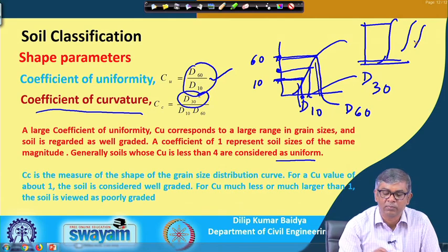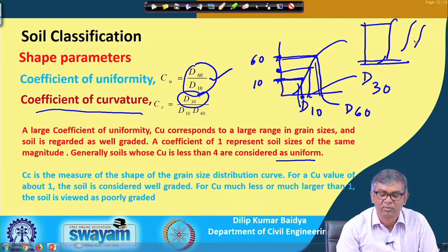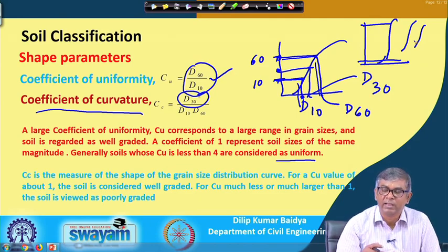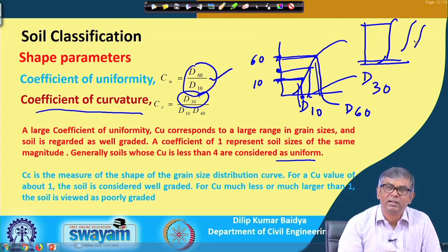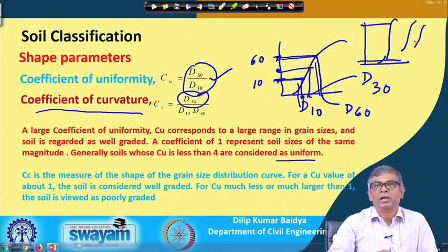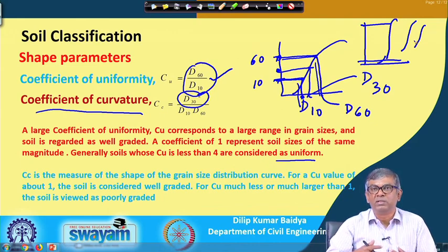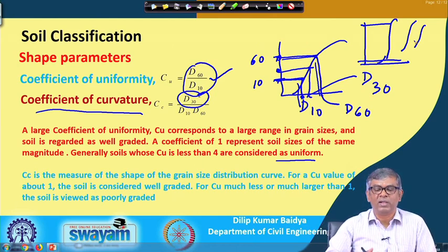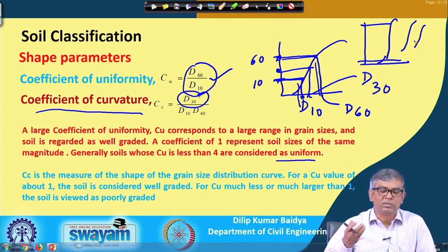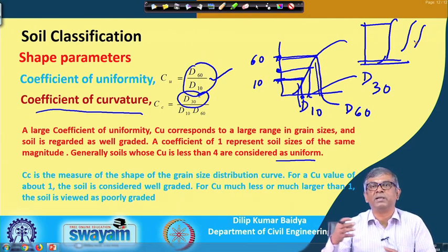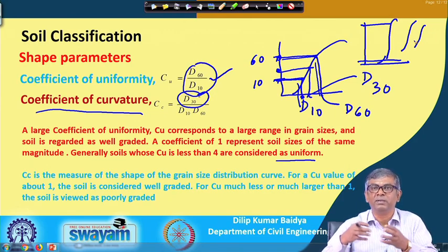If the Cu value is between 1 and 4, those soils are treated as uniform. If it is more than that, it is called well graded. In soil mechanics, uniform soil is not a good parameter — when soil is uniform, the porosity is high. We always expect well graded soil; when well graded, different sizes of particles are present, smaller particles fill the voids between bigger particles, the soil is in a more compact state, and it has more strength.